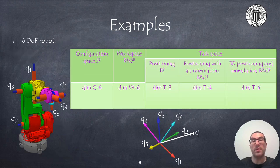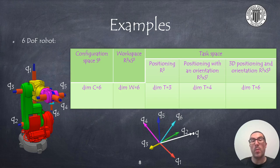In the case of a 6-degrees-of-freedom robot arm, the configuration space is a subspace of S6, while the workspace is a subspace of R3×S3. Its generalized coordinate vector has dimension 6 with the values of the angles of the six joints. With this robot, positioning tasks can typically be performed, implying a task space dimension of 3; positioning with a final orientation implies a dimension of 4; and full 3D positioning with orientation tasks imply a task space dimension of 6.